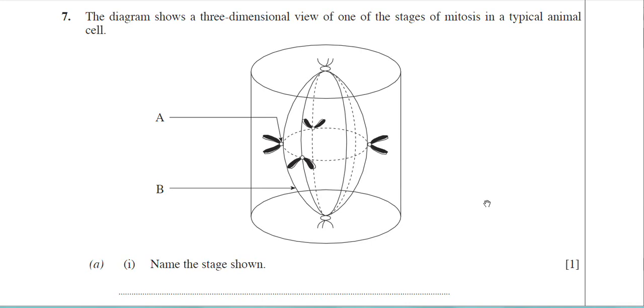Hi, we're up to question 7 now on the January 2009 BY-1 paper. This is a cell division question, and the examiner here has drawn a three-dimensional view of a cell. He has stated it's an animal cell. Let me annotate a few important points here.